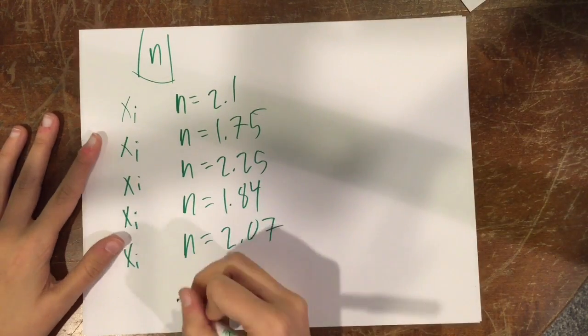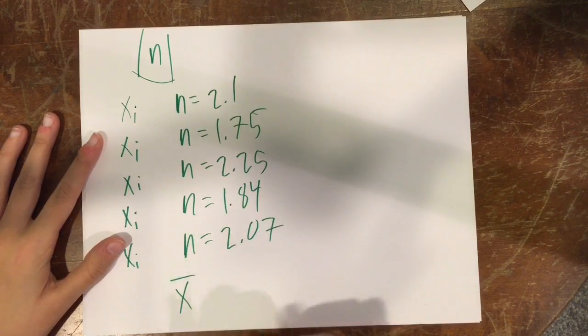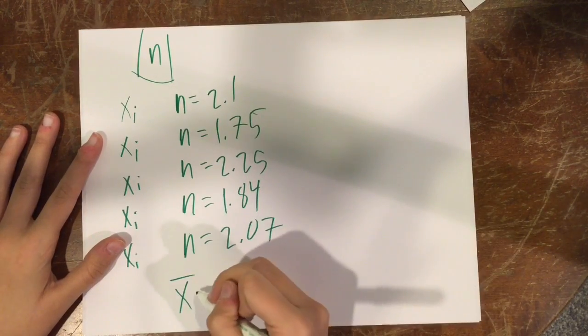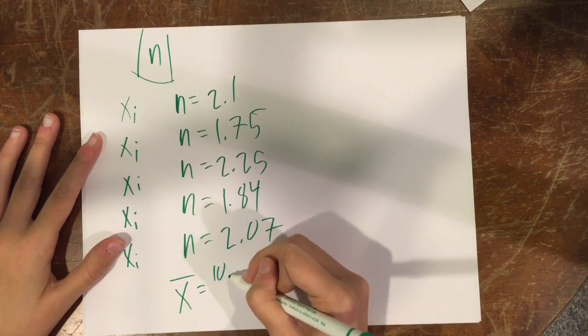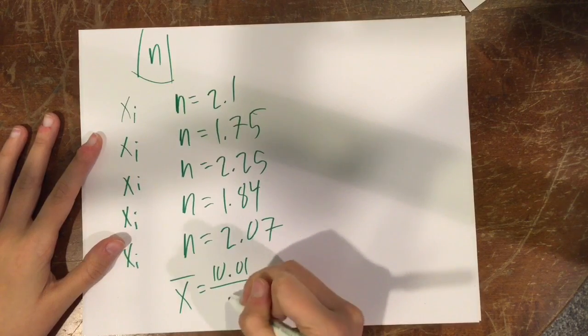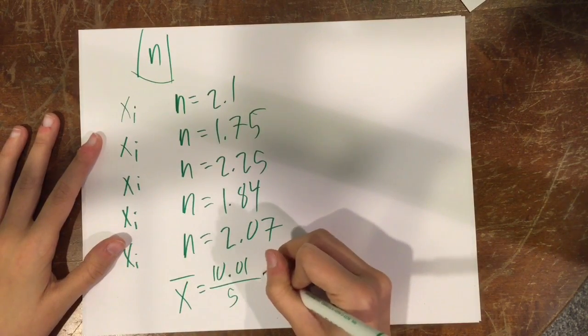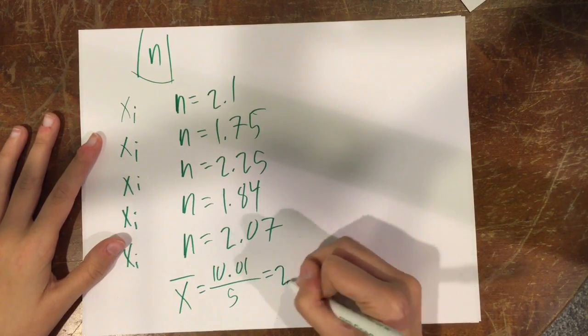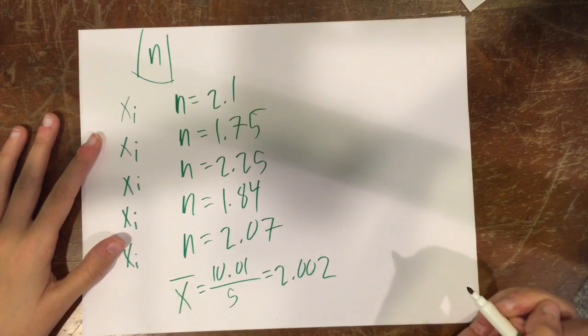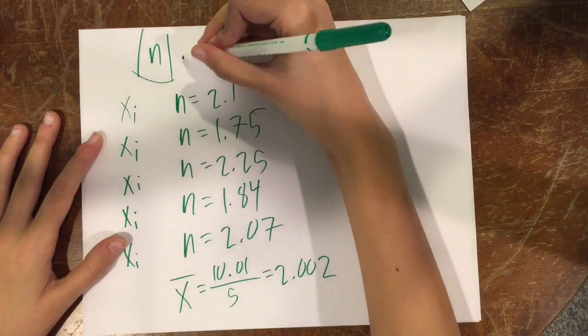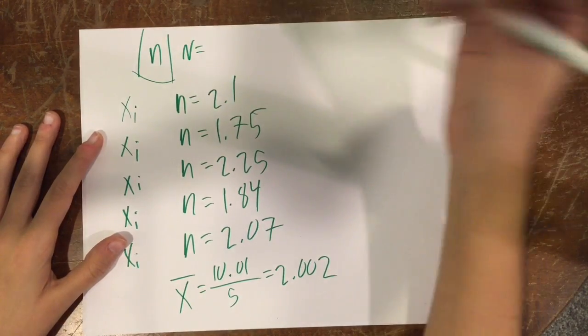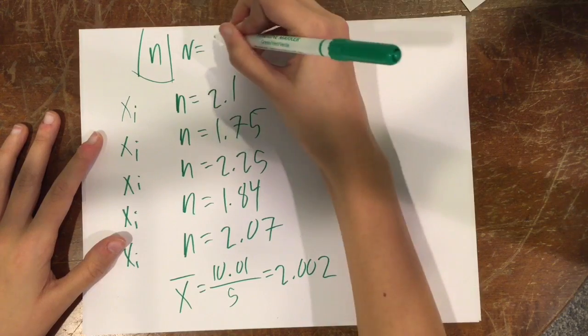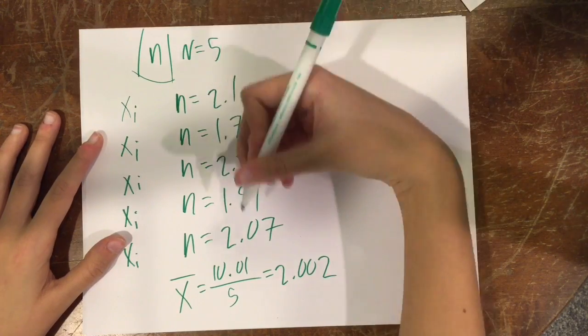And then the average of all these, or the mean, comes out to 10.01 divided by 5, which equals 2.002. So capital N from the equation will come out to be 5.